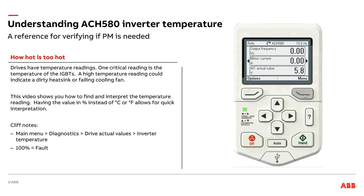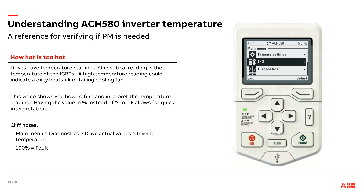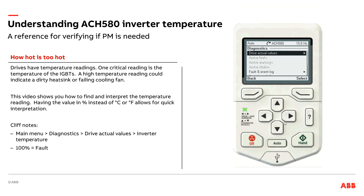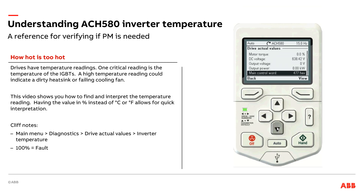I'm going to go ahead and simply click on Menu, come on down here to Diagnostics. Diagnostics — looking at temperature. So I'm going to look at the first one on the list, Drive Actual Values, go into there, and now let's scroll down and look for something involving temperature. No need to dig through parameters — just go down the list and we can see right here: Inverter Temperature.